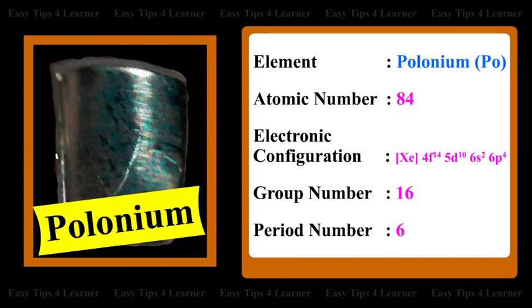For the element Polonium: atomic number 84, electronic configuration [Xe] 4F¹⁴ 5D¹⁰ 6S² 6P⁴, group number 16, period number 6.